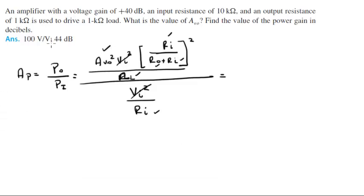We know the value of AVO from the first part of the exercise. So when you plug in 100 and all the resistances given into your calculator, you're going to get that this equals 25,000 watts over watts.